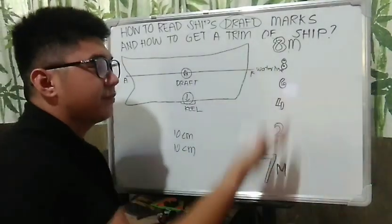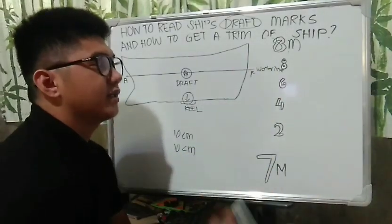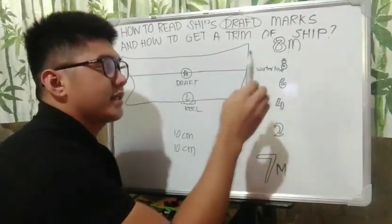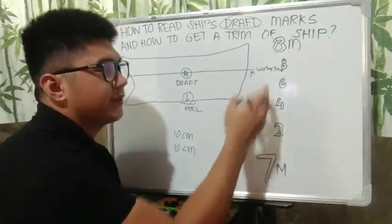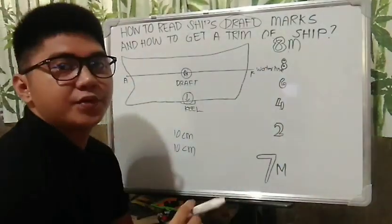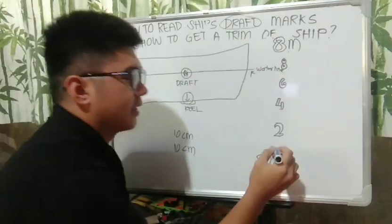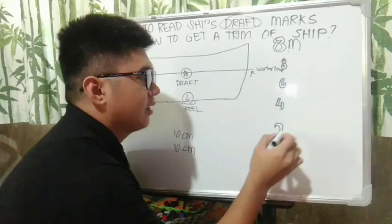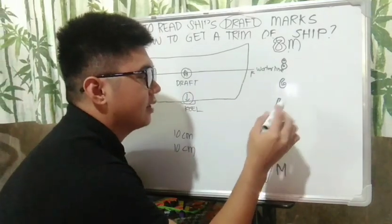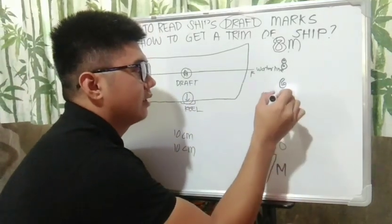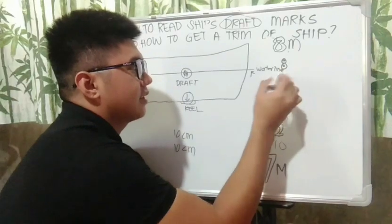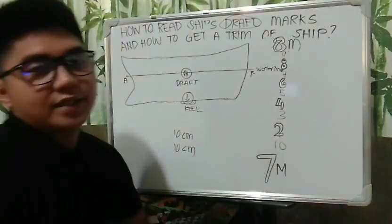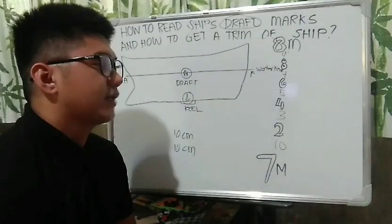Kung manunotis rin po kayo, yung mga number natin starts with an even number — 2, 4, 6, 8. So, yung mga spaces na yan, yan yung mga odd numbers. For example: 10, 20, 30, 40, 50, 60, 70, 80, 9 — yan po yung tinatawag nating imaginary number. Isa rin yan sa mga naku-confuse dito sa may mga spaces na yan.